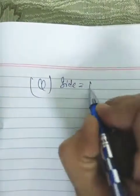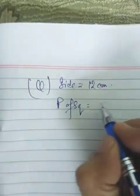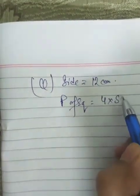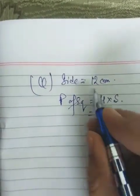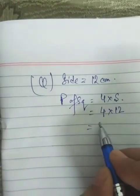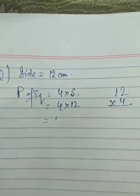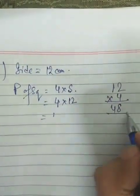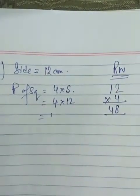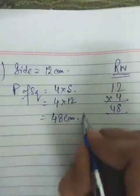Let us try one more sum. The side given is 12 cm. If the side of a square is 12 cm, the perimeter of the square — according to the formula 4 into S — we put 12 in place of S: 4 into 12. Always make a rough column on the right-hand side. So it will be 48 centimeters, and that is the answer.